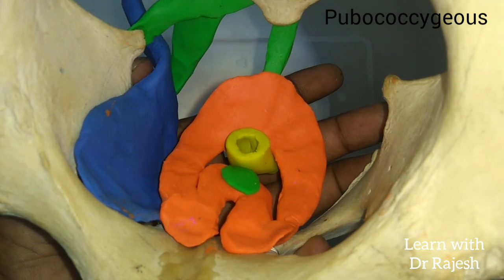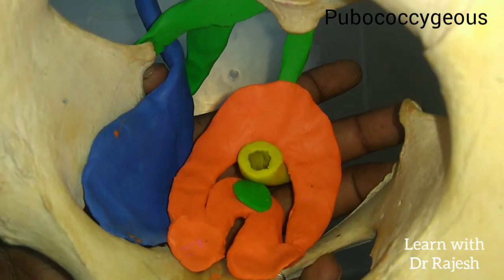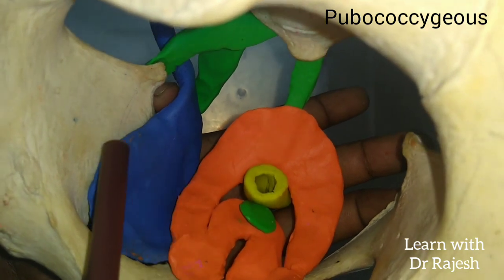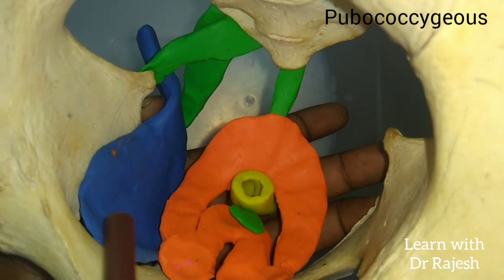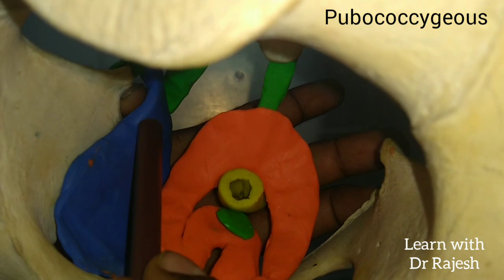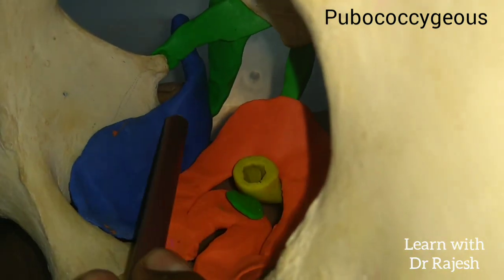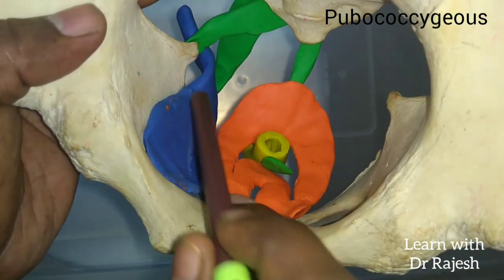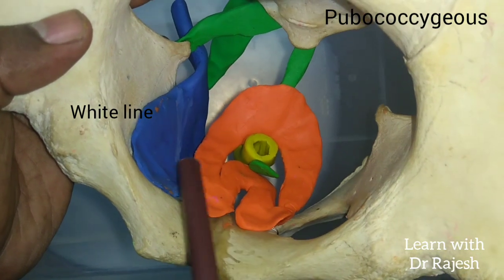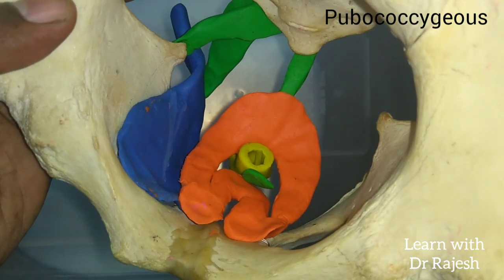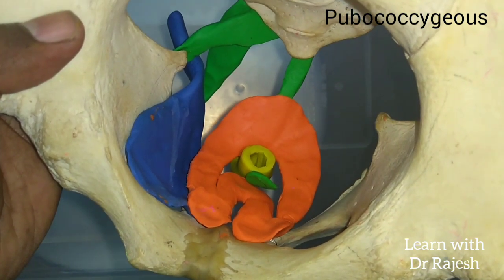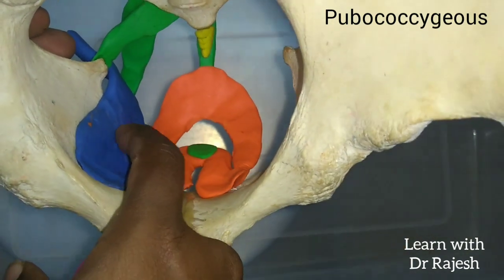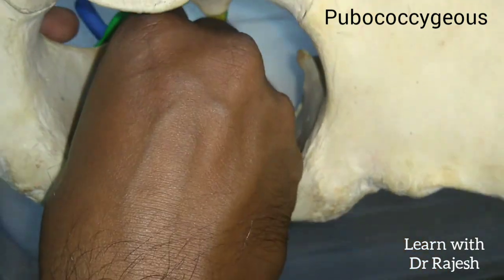To understand the attachment of the posterior fibers, we need to know about the fascia covering the obturator internus. This obturator internus is covered by a thick fascia called the obturator fascia. The obturator fascia is thickened along the midline where the pelvic muscles attach, forming a tendinous arch — also called the white line of the obturator fascia. The posterior group of muscle fibers takes origin from the anterior half of this white line.